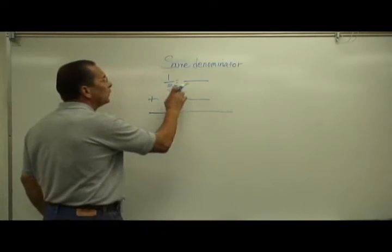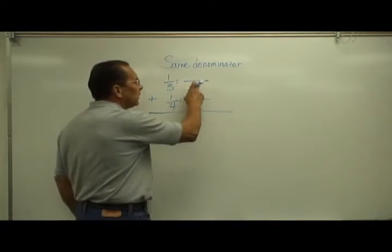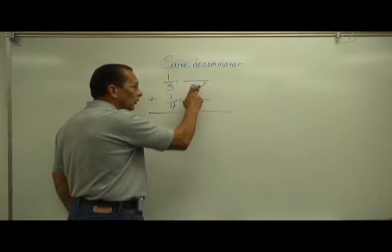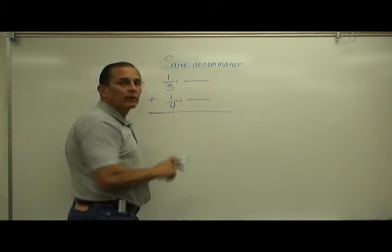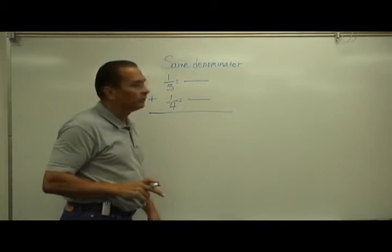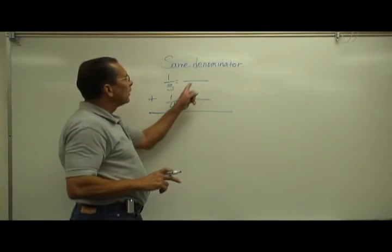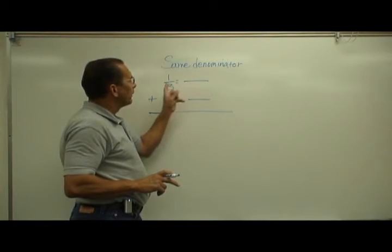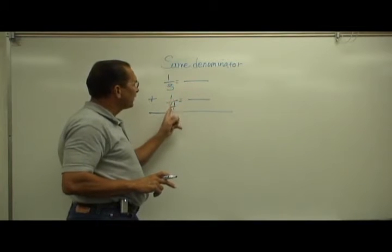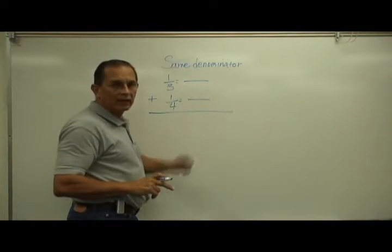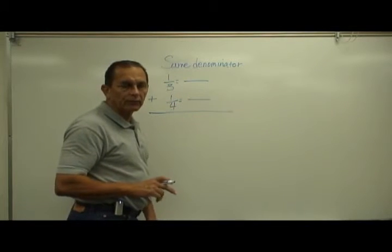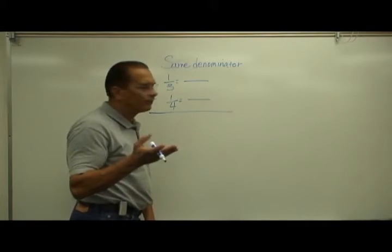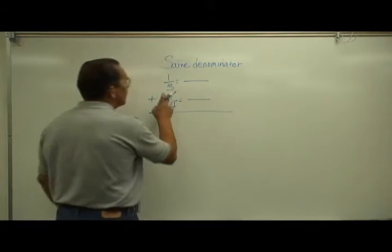How do we do that? We look for a number that will be the same in both places — a number that both the three and the four will divide into evenly. I'll show you.